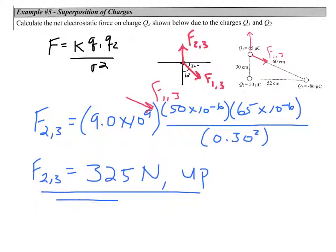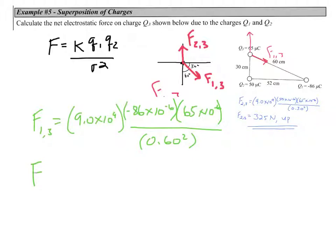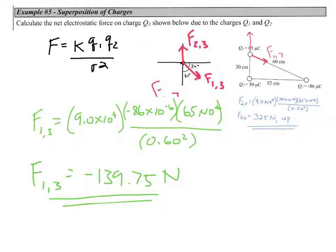That's the force acting on charge three. Now looking at force one on three, applying Coulomb's Law gives us negative 139.75 newtons. That negative simply means it's an attractive force, so the force between charge one and three is directed along the line between the two of them.